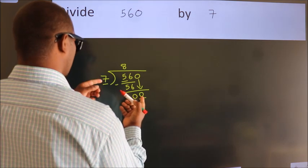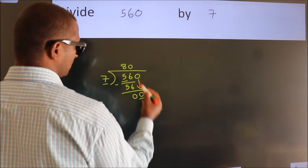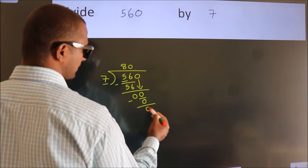When do we get 0? In the 7 times table. 7 times 0 is 0. Now we subtract. We get 0.